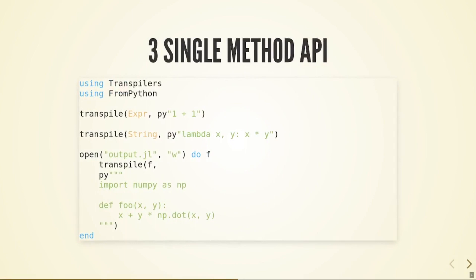Transpylers.jl has a very simple API. It only has one method called Transpyl, which takes as the first argument the object that you want to transpile the code into and as the second argument the code that you want to transpile. In this example, you are transpiling the Python code 1 plus 1 into a Julia expression. You can also transpile it into a string or a file.